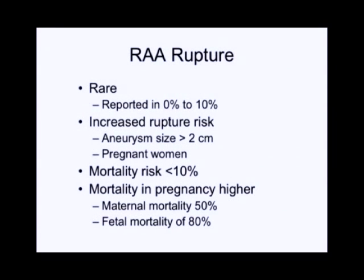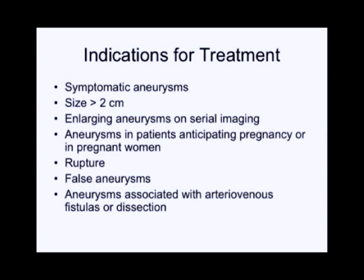Renal artery aneurysm rupture is rare — reported in less than 10% of patients. It's difficult to know exactly what prompts rupture, but it's been associated with aneurysm size greater than 2 centimeters and is more common in pregnant women with fibromuscular dysplasia. Mortality risk from rupture is thought to be less than 10%, but maternal mortality in pregnancy is up to 50%, with fetal mortality in the majority of cases. Indications for treatment include symptomatic aneurysms, those over 2 centimeters, aneurysms enlarging on serial imaging, aneurysms in pregnant women or those anticipating pregnancy, ruptured aneurysms, all false aneurysms, and aneurysms associated with arteriovenous fistula or dissection.